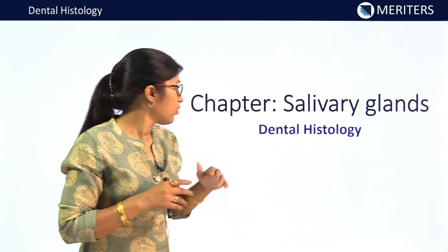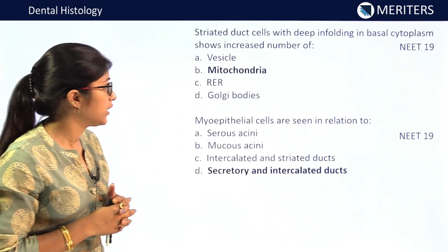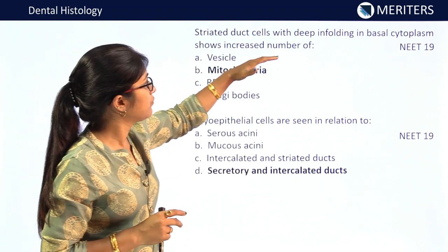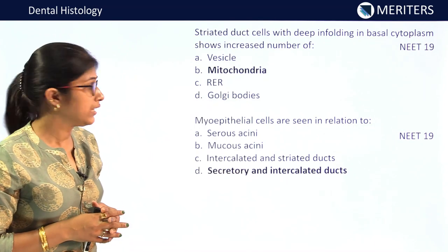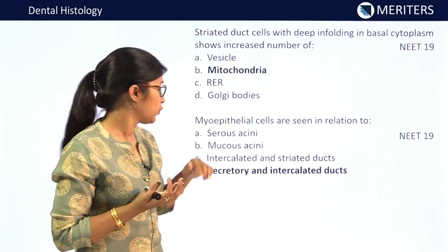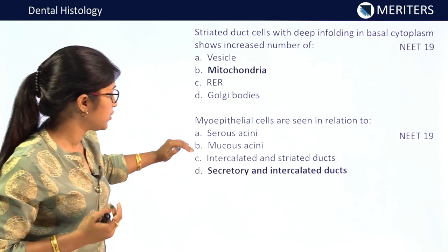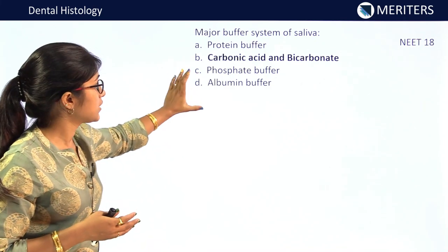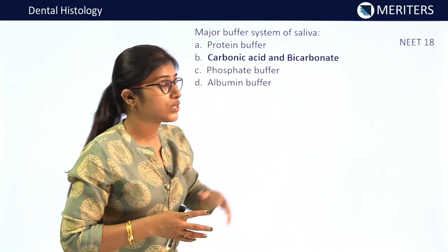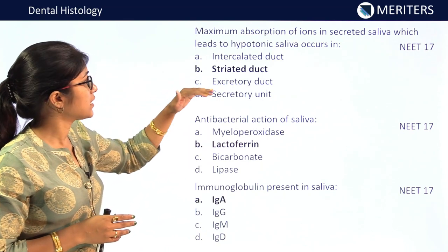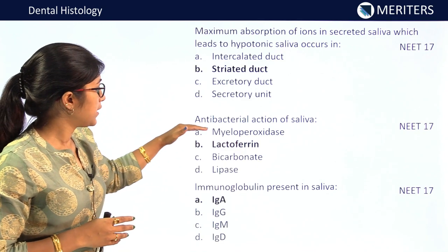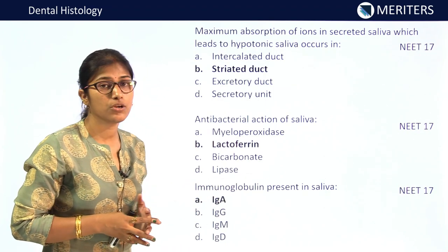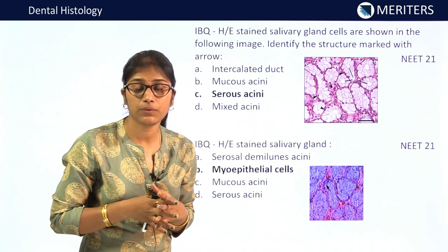Now for salivary glands: striated duct cells with deep infolding in basal cytoplasm show increased number of mitochondria — NEET 2019. Myoepithelial cells are seen in relation to secretory and intercalated ducts — NEET 2019. Major buffer system in saliva is carbonic acid-bicarbonate — NEET 2018. Maximum absorption of ions in secreted saliva, leading to hypotonic saliva, occurs in striated duct — NEET 2017. Antibacterial action of saliva: lactoferrin — NEET 2017. Immunoglobulin present in saliva: IgA — NEET 2017.